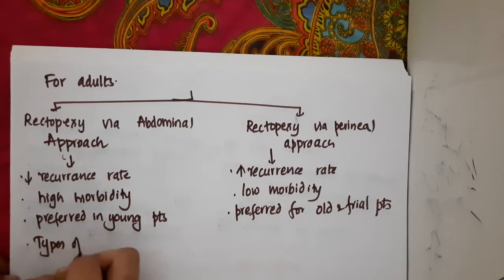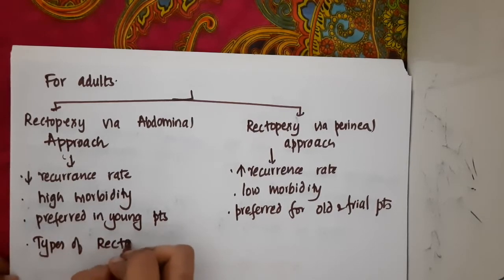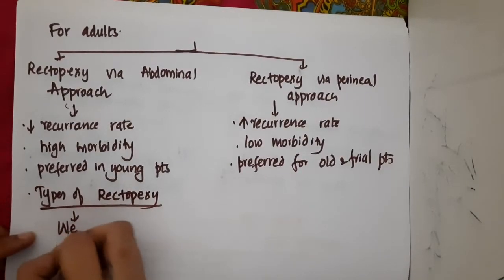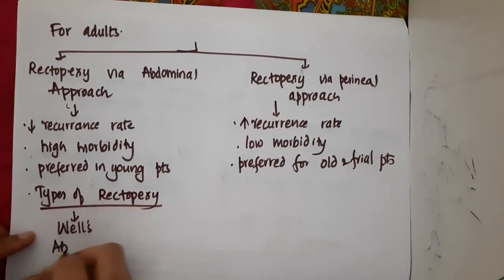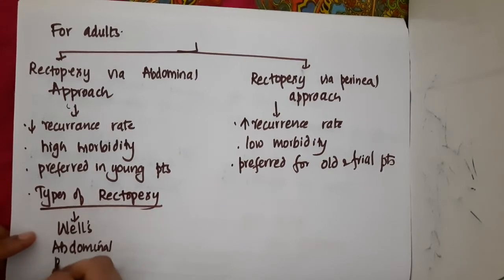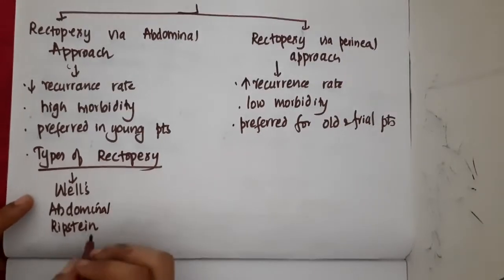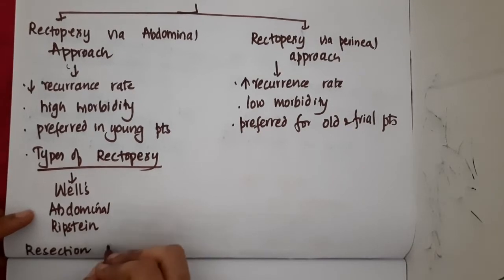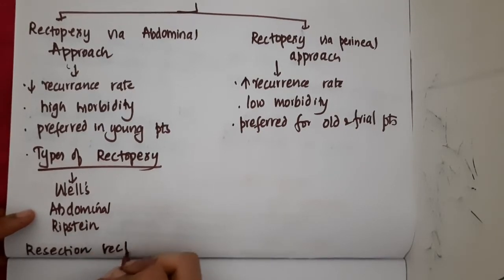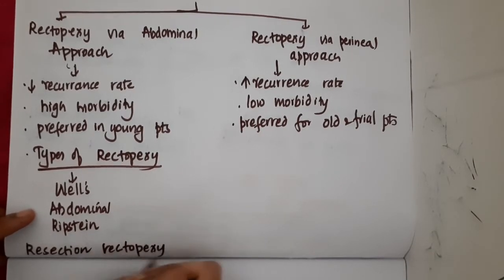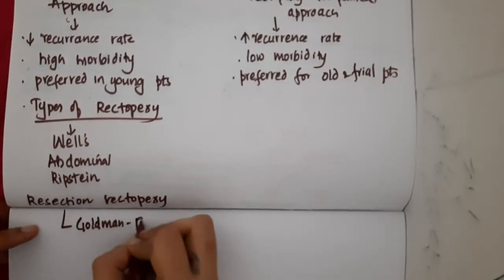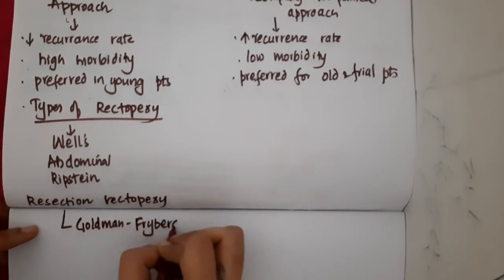What are the types of rectopexy via abdominal approach? We have three types: Wells Rectopexy, Abdominal Rectopexy, and Ripstein Rectopexy. We also have one more type which is Resection Rectopexy, and within that we have one type called Goldman-Freiburg procedure.